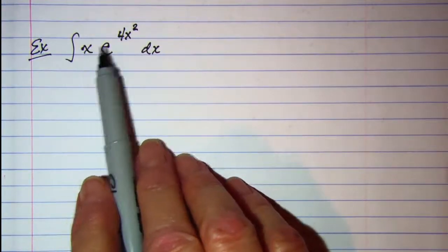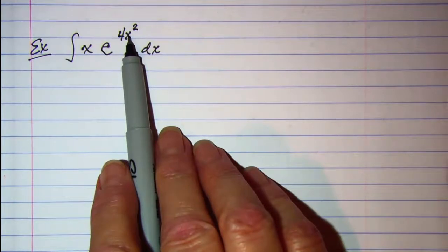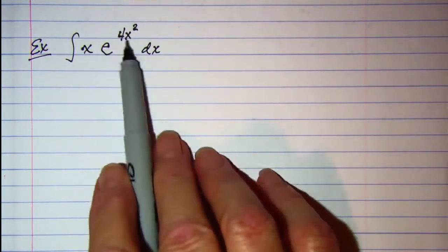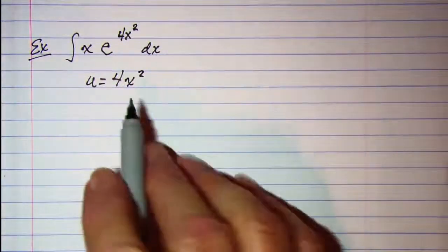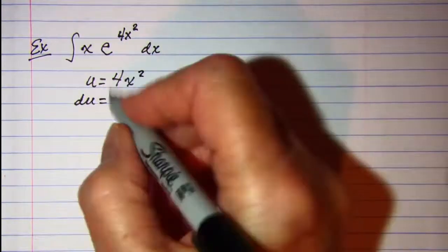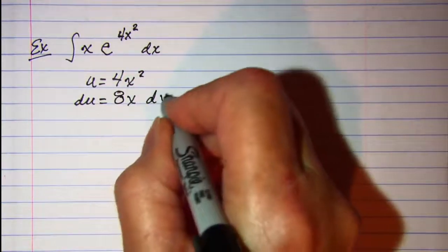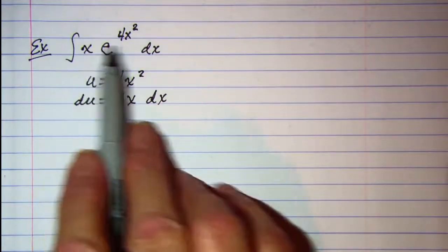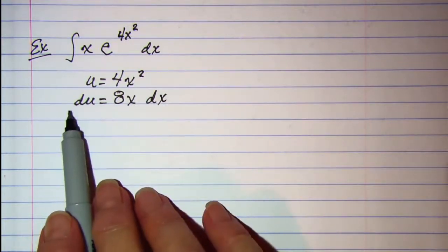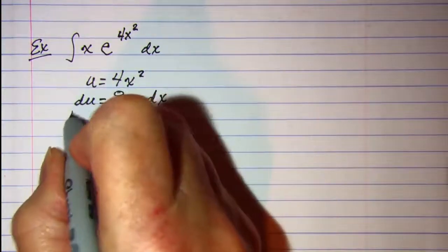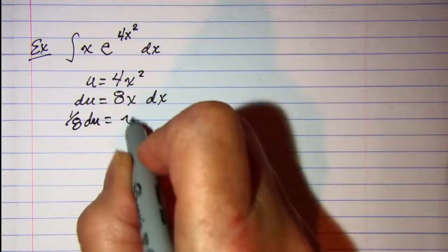Let's do another example. Here we have the product of x times e to the 4x squared. I'm going to let u be 4x squared, and my derivative of this is 8x dx. Well, all I have is an x factor and a dx factor, so I'll need to put this 8 over on the other side with the du. So I have 1 eighth du is equal to x dx.